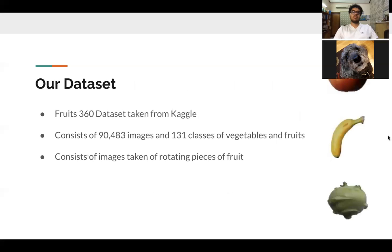Our dataset was taken from Kaggle. It's a dataset called Fruits 360 and it consists of around 90,000 images and 131 different types of vegetables and fruits. The way that the images were collected was the researchers rotated the fruits and vegetables and took images of the fruit as it rotated, and this led to a lot of different varying images of the fruits and vegetables and a lot of variety in our dataset.